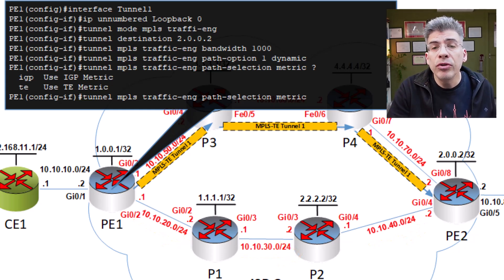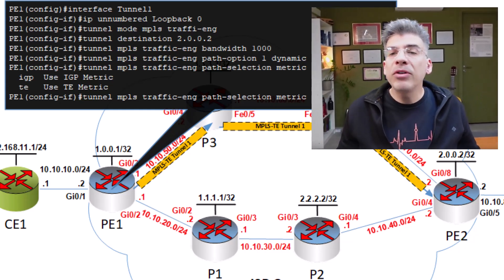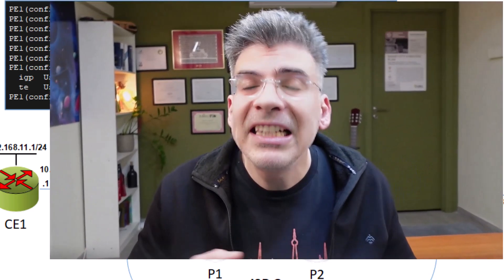So that's an overview of the TE and IGP metrics and how they can be used to manipulate the path that TE tunnels take through the topology. I hope you found this video useful — if you did, please click that thumbs up button. If you have any questions or feedback, feel free to let me know in a comment below. Please subscribe to get updates on newly published videos. I'm Lazarus at Telecom Tech — thank you for watching.